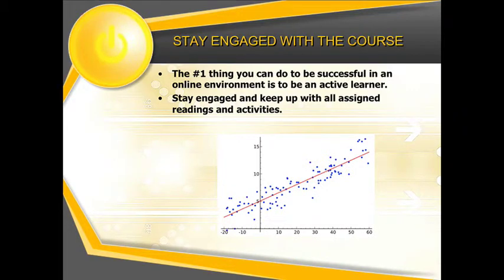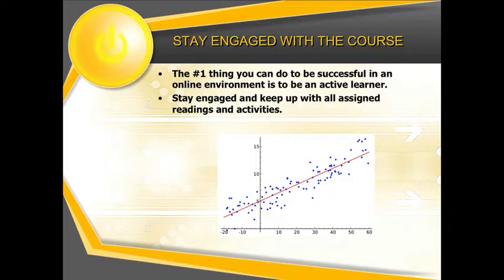The number one thing you can do to be a successful learner in an online environment is to be an active learner. It means staying engaged with the course. It means keeping up with all assigned readings and activities — pretty straightforward. What causes problems in online education is often the same thing that plagues students in traditional classrooms: number one, in my estimation, is the failure to keep up.